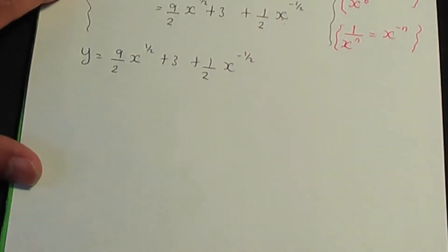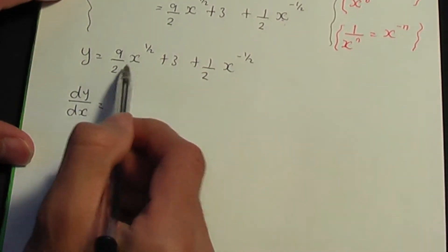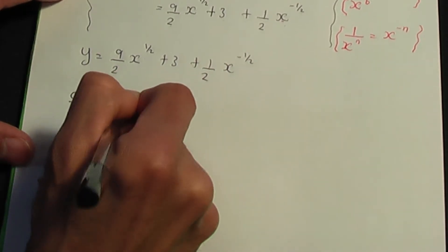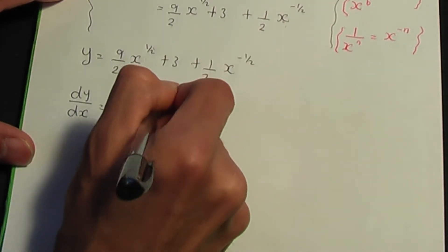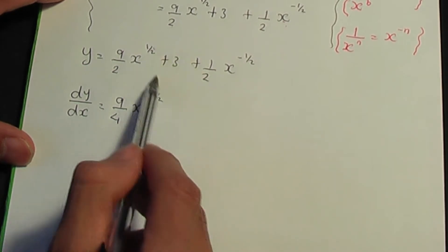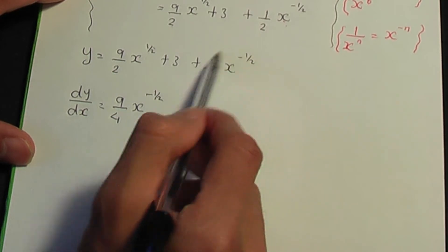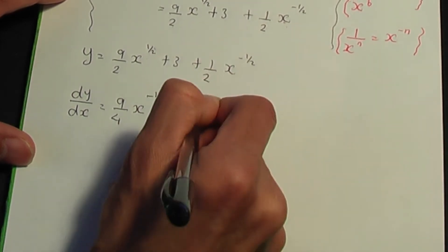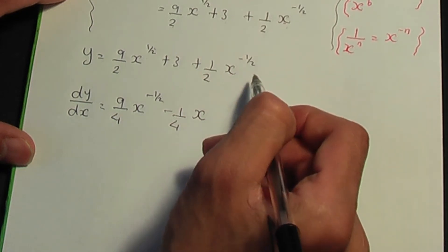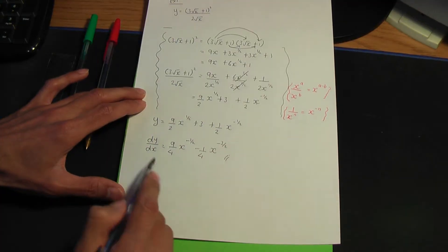Now we can differentiate to calculate dy/dx. Multiplying by the power and subtracting 1 from the power: for the first term, (1/2) × (9/2) = 9/4, and the power becomes 1/2 - 1 = -1/2. The constant 3 differentiates to 0. For the last term, (-1/2) × (1/2) = -1/4, and the power becomes -1/2 - 1 = -3/2. So dy/dx = (9/4)x^(-1/2) - (1/4)x^(-3/2).